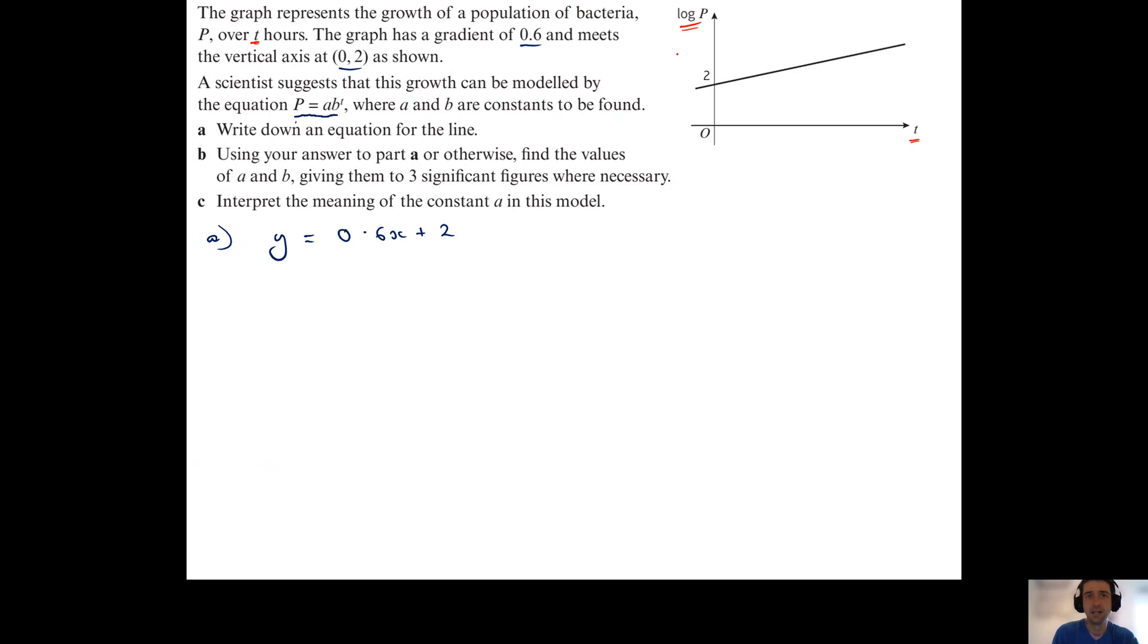The population, the number of bacteria p, has been logged, and the purpose of that is to turn what would have been a non-linear relationship into a linear relationship by taking logs of all these large values to turn them into smaller ones and creating the linear relationship you see here.